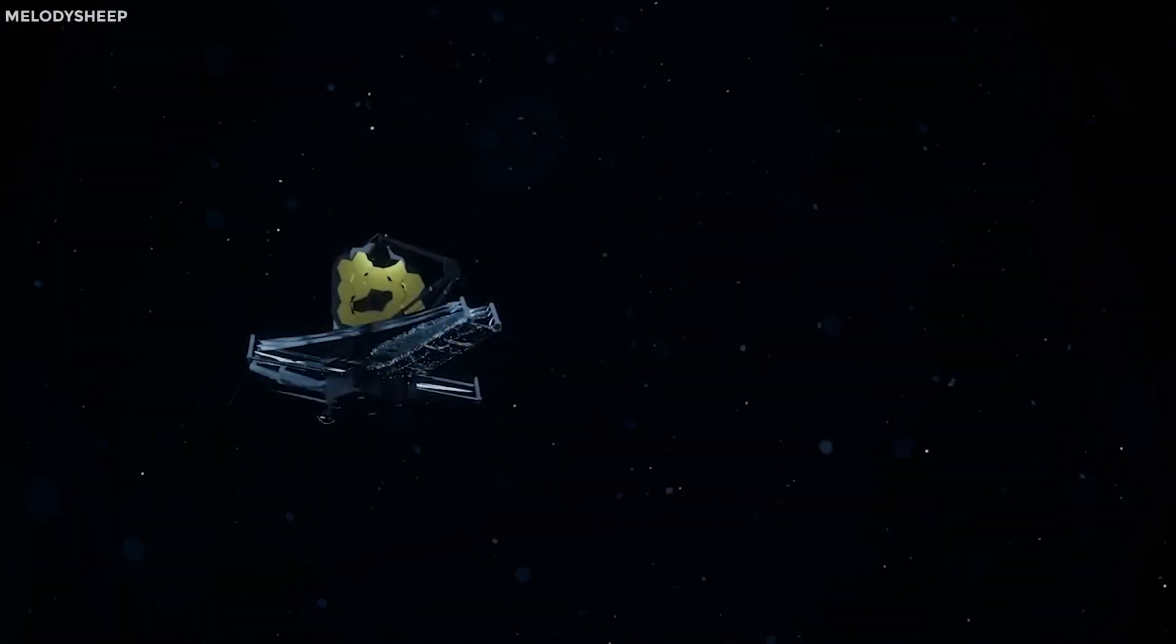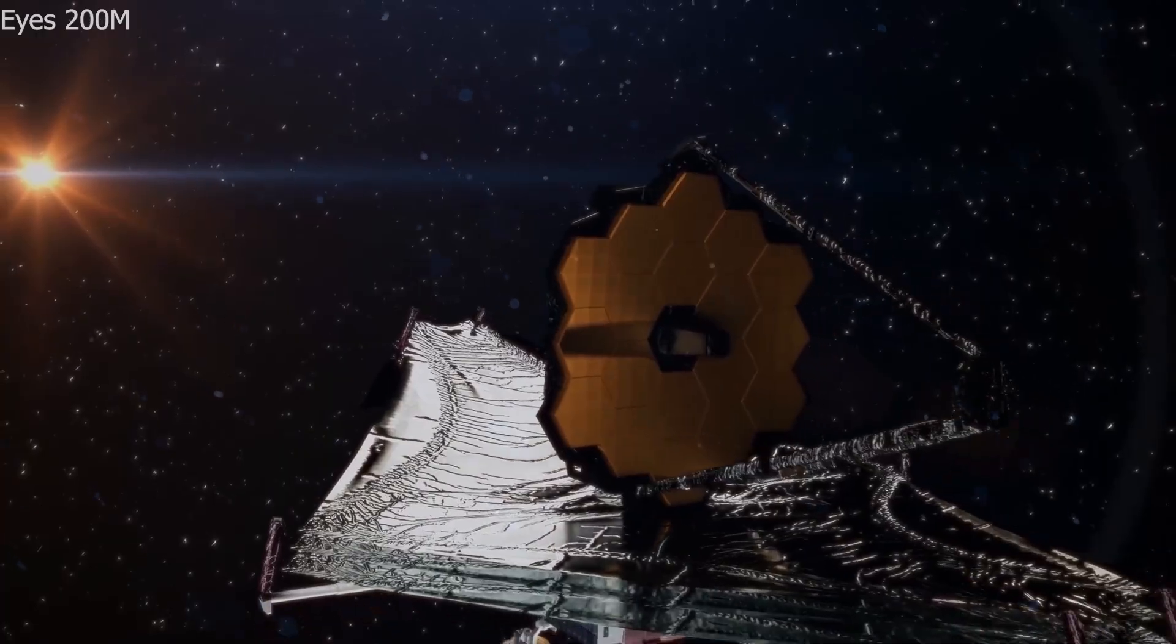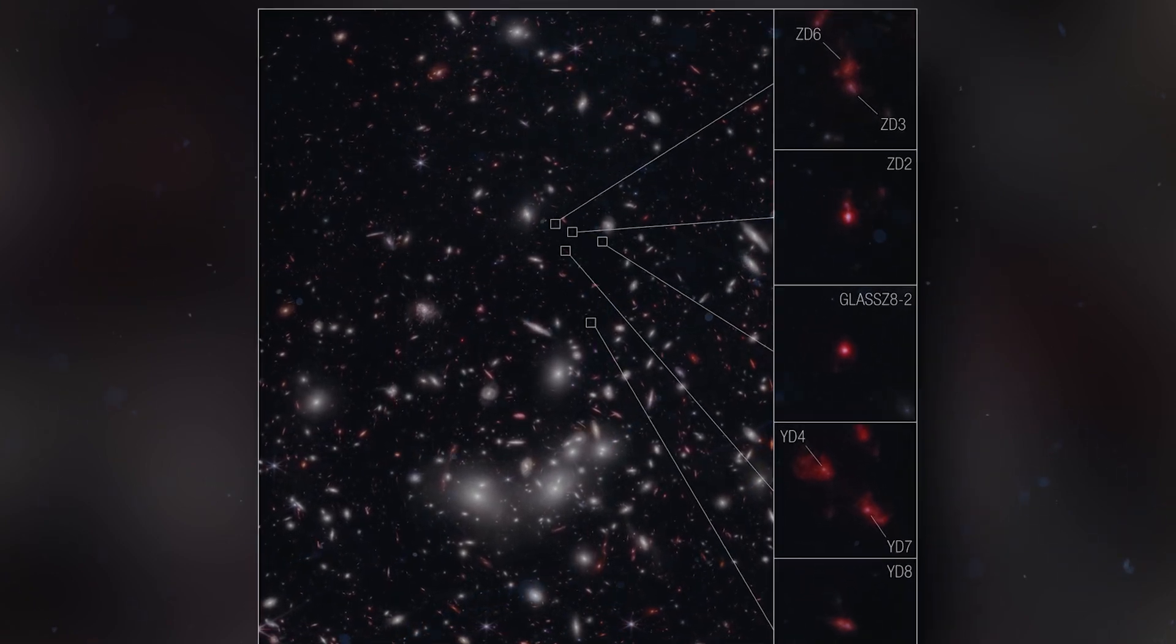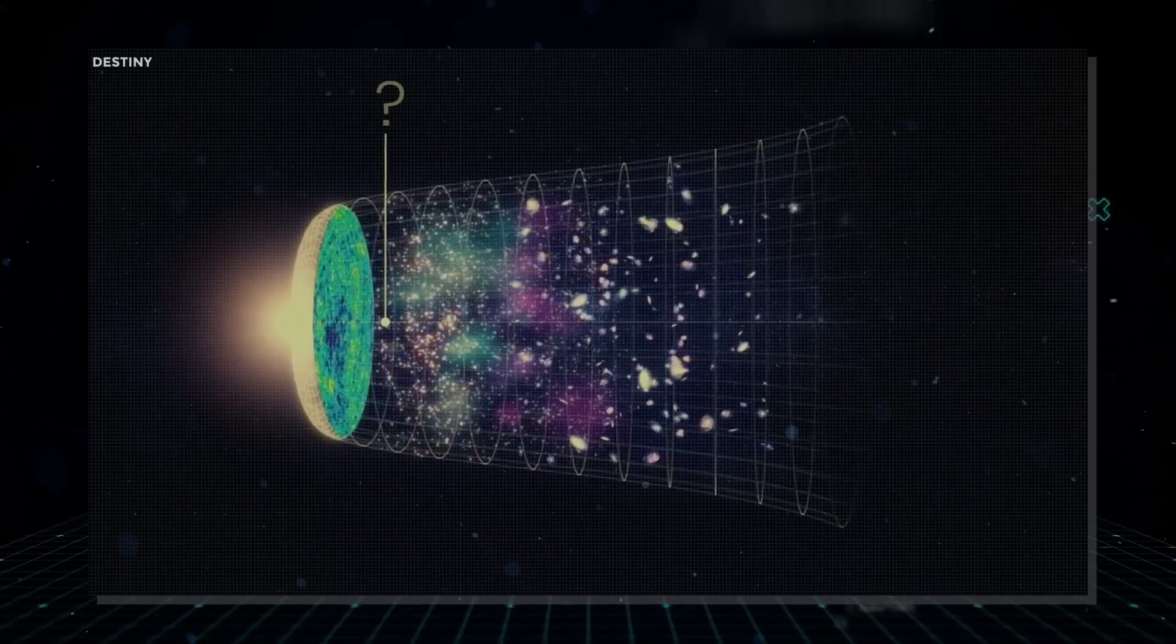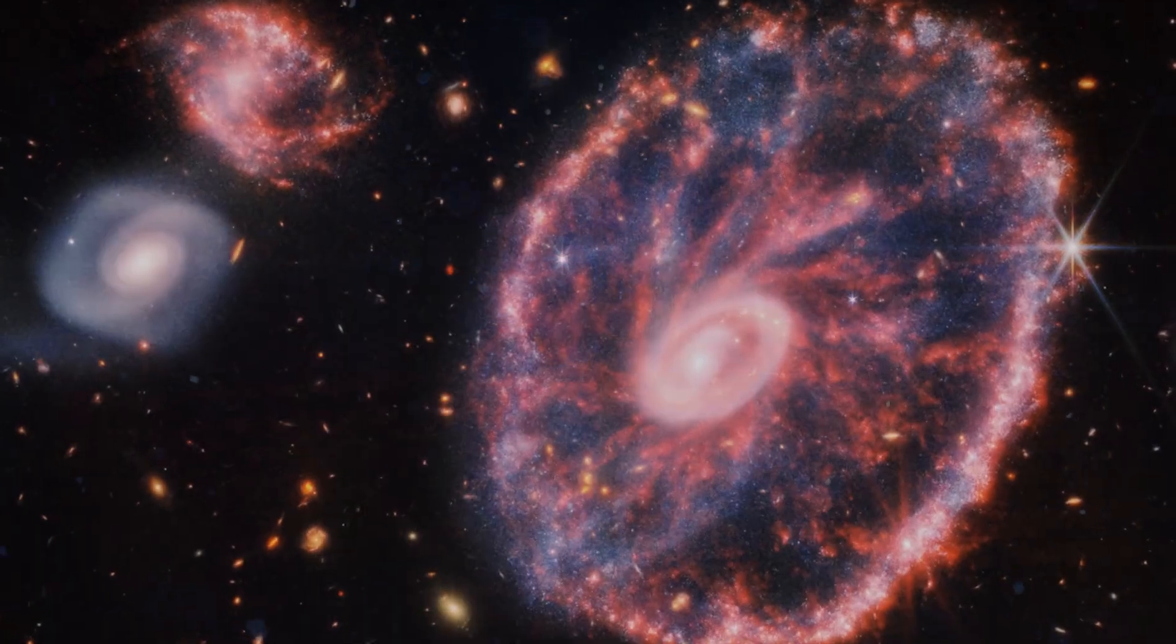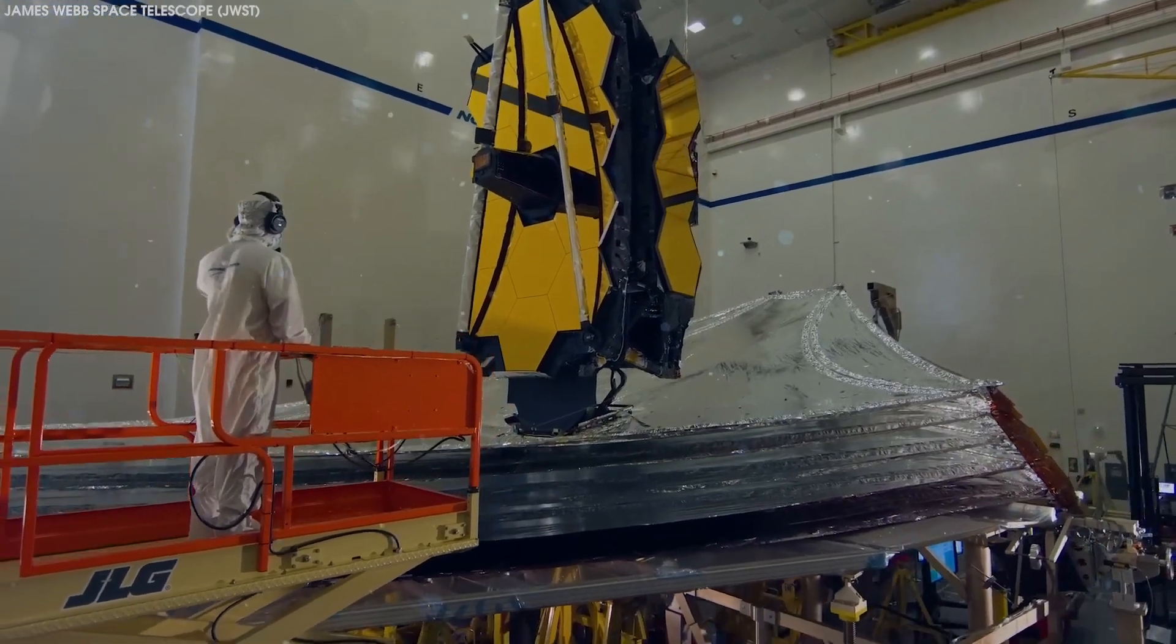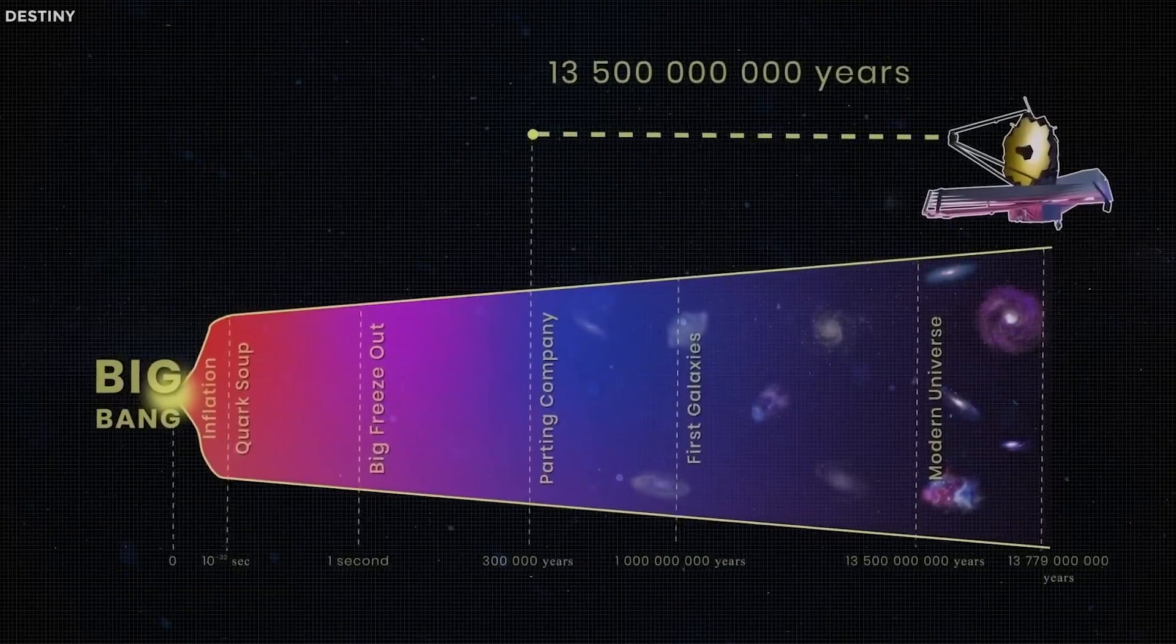The James Webb Space Telescope has captured stunning images and made groundbreaking discoveries during its first year of observations. However, a claim that it detected galaxies in the very young universe caused some confusion. Many believed this contradicted the Big Bang model of cosmology, leading to sensational headlines, but the claim turned out to be false. New research has confirmed that the distant galaxies observed by the James Webb Space Telescope are entirely consistent with our current understanding of cosmology, supporting the Big Bang theory.